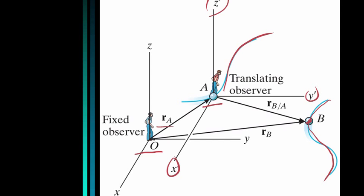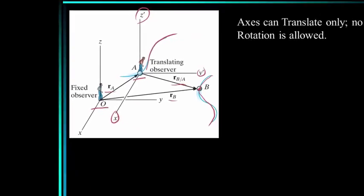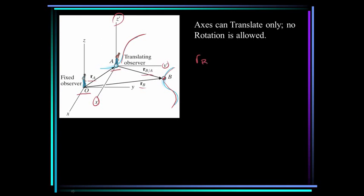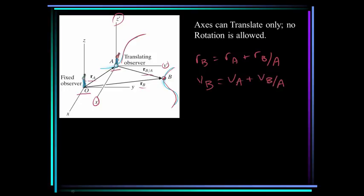We have three vectors: R_A, R_B, and R_{B/A}. We can do a vector addition, saying that R_B is equal to R_A plus R_{B/A}. It is a simple matter to take the derivative of this equation with respect to time. The change in R with respect to time is the velocity. So the velocity of B is equal to the velocity of A plus the velocity of B with respect to A. Likewise, we can take the derivative again and get the acceleration of B is equal to the acceleration of A plus the acceleration of B with respect to A.